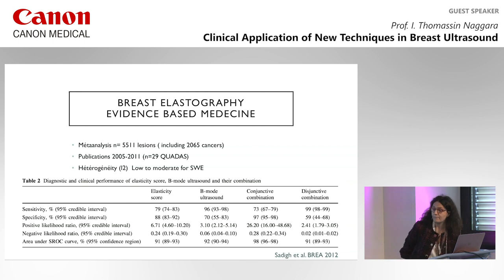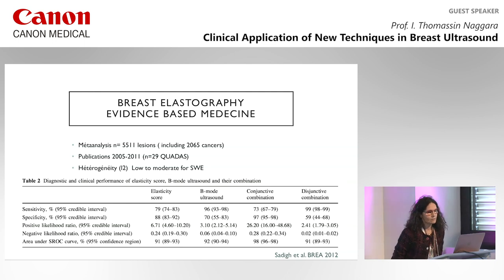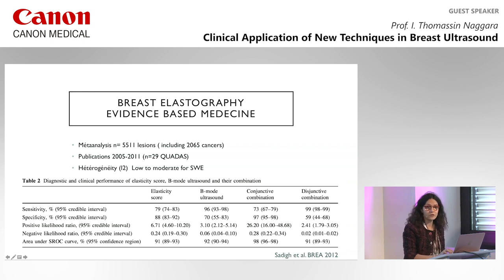Looking at the evidence-based medicine for elastography, this meta-analysis shows some heterogeneity between studies with a high kappa coefficient. Importantly, elastography must not be used alone — it must be combined with B-mode. Using only the elasticity score you miss some cancers, with sensitivity of only 80%, but good specificity. On B-mode it's exactly the opposite. The best approach is combining elasticity score and B-mode to have the best positive likelihood ratio of malignancy.